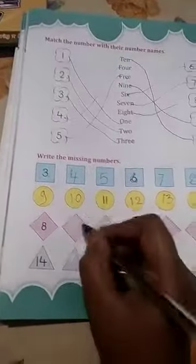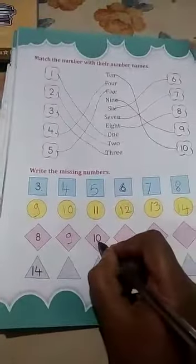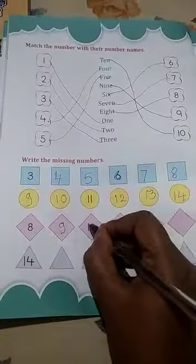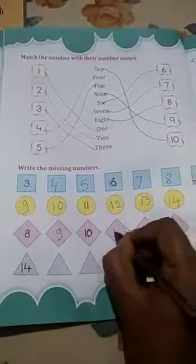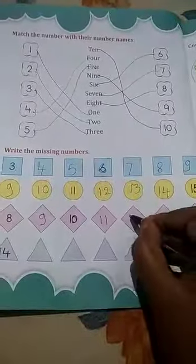Next is 8. 8 after it is 9. 1, 0, 10. You have to trace this one number also. 1, 2, 10. 1, 1, 11. 1, 2.